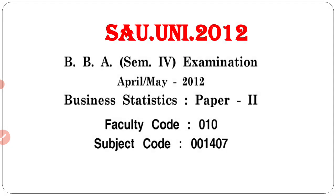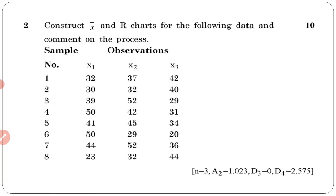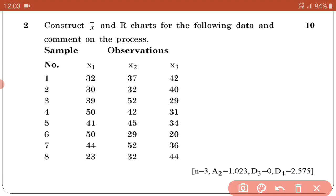Today we discuss one question from Saurashtra University 2012. Our subject BBSM 4 examinations April May 2012 paper Business Statistics. The question is in ten mark. Construct X bar and R chart for the following data and comment on the process. Samples and observations are given. Here three observations are given. So it is very important. First find sigma X. Here we are prepared the column of sigma X. First you write the number, then X1, X2 and X3, and then total.